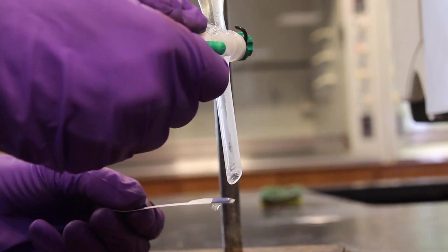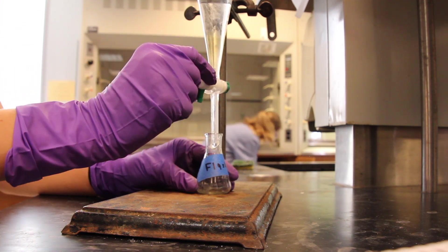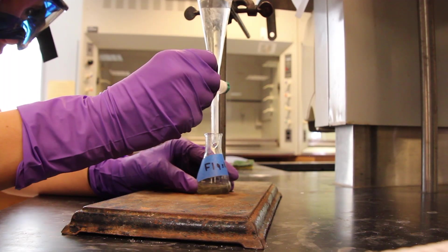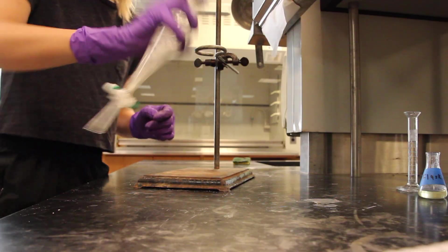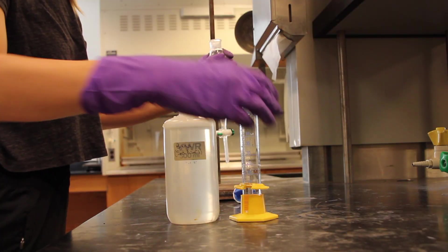Use pH paper to test the pH of the aqueous layer. If it is basic, separate and drain off the lower layer into a 25 milliliter Erlenmeyer flask labeled Flask 2. Repeat the extraction with 5 milliliters of additional 1.5 molar aqueous NaOH and add it to the original basic extract in Flask 2.